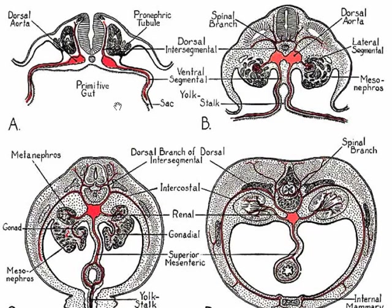This image shows transections through an embryo at different stages of development from early to later, with the arteries colored red. Initially there are paired dorsal aorta, each giving off an intersegmental branch dorsally and ventrally, with lateral branches also coming off — for example, to the kidney. The dorsal aorta are fusing together, so at later stages there is just one aorta, representing the adult situation.